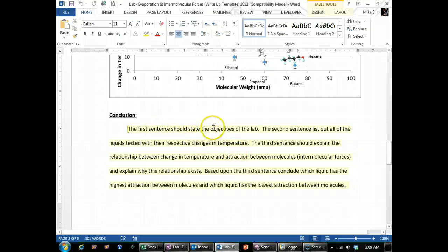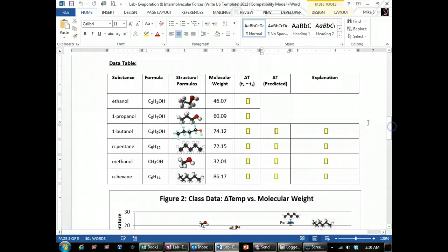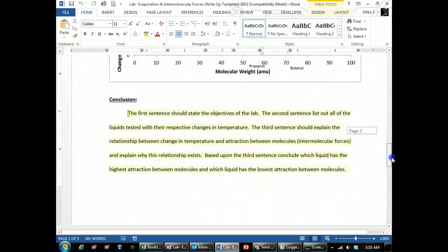And then the conclusion is where the majority of your grade is going to come from. So the first sentence should state the objective. And the objective, if you look on your packet, it'll be on one of the sentences in there. And then the second sentence lists out all the liquids, which the liquids are up here, and then their change in temperatures. So what did you get? Ethanols delta T, or change in temperature was this. It should be a negative number. All of them should be negative.